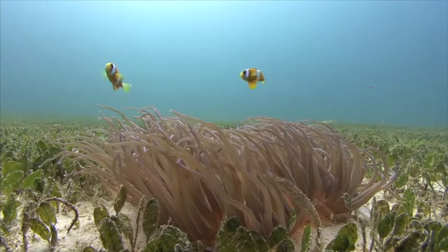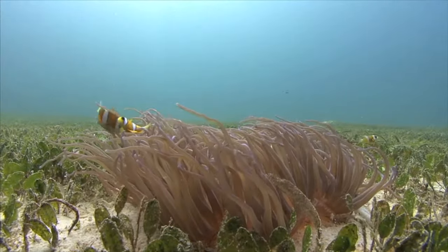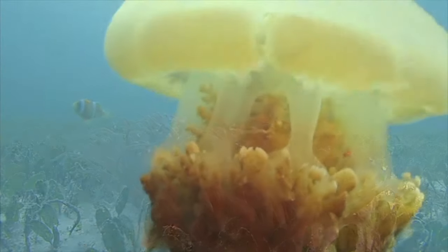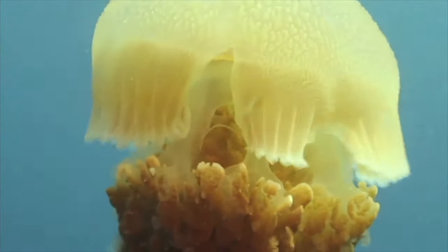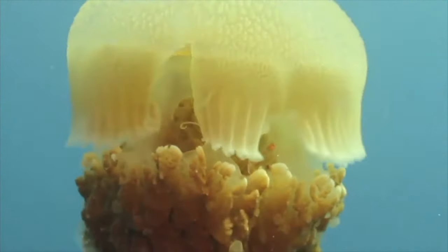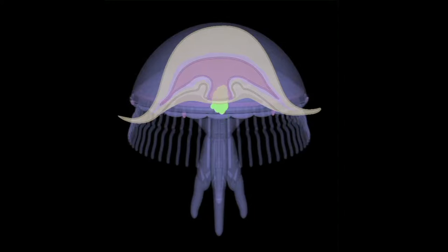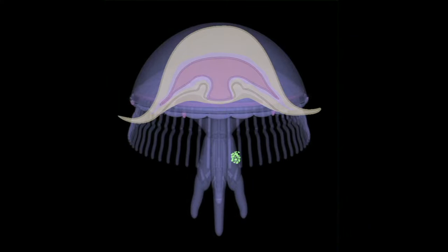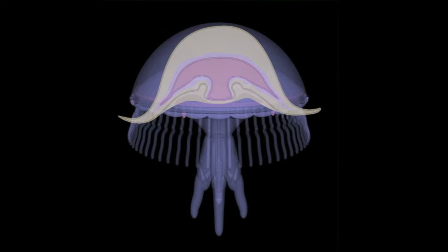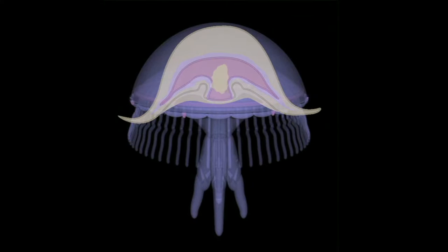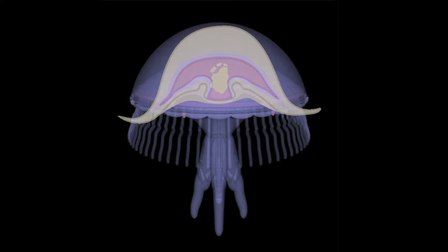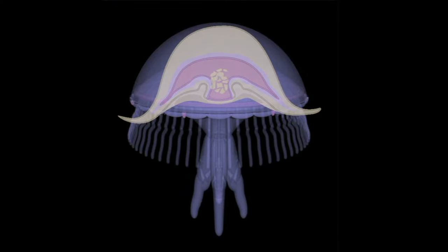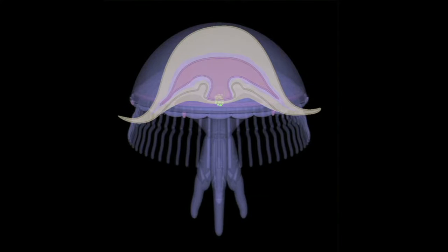One of the first types of digestive tracts was the gastrovascular cavity, found in cnidarians like jellyfish and sea anemones. In a gastrovascular cavity, food goes in and waste comes out through that same opening. Food enters the gastrovascular cavity where enzymes break down the food for use by individual cells, and waste material is then expelled through the same cavity.